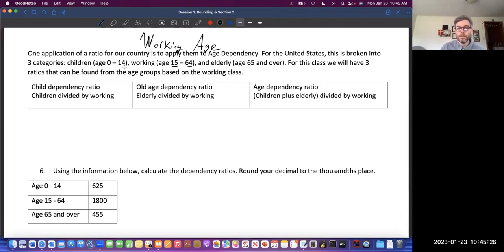Zero through 14 is considered childhood, and 65 and older would be the elderly, the retired. So child dependency ratio is this group of ages, and you're going to take children divided by the working.